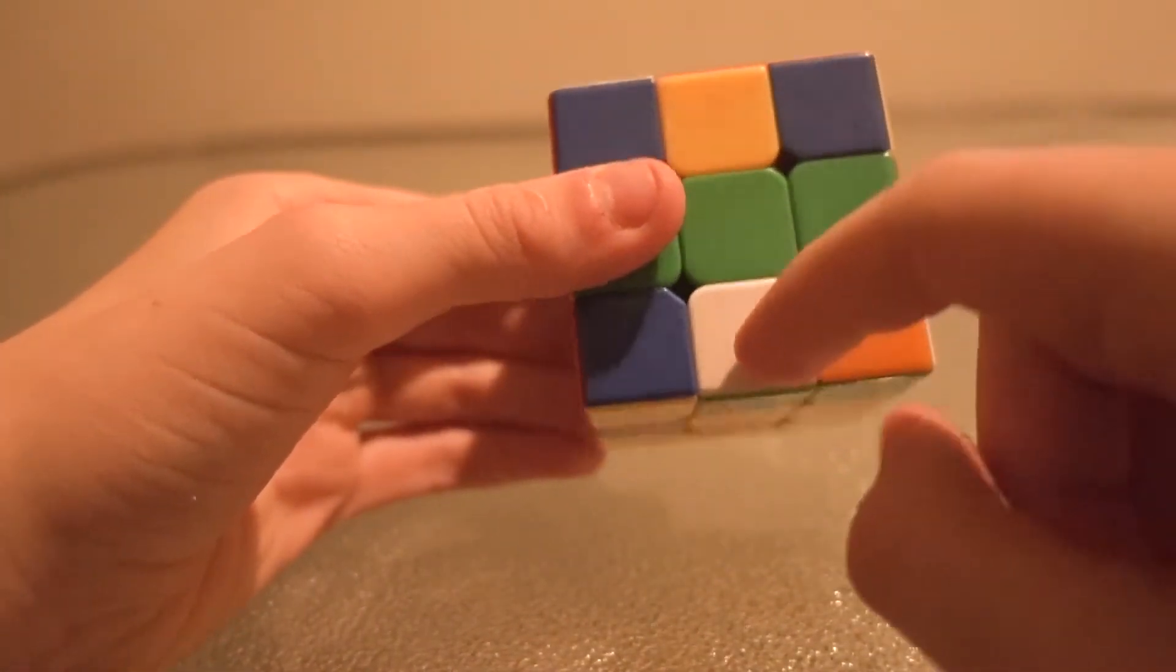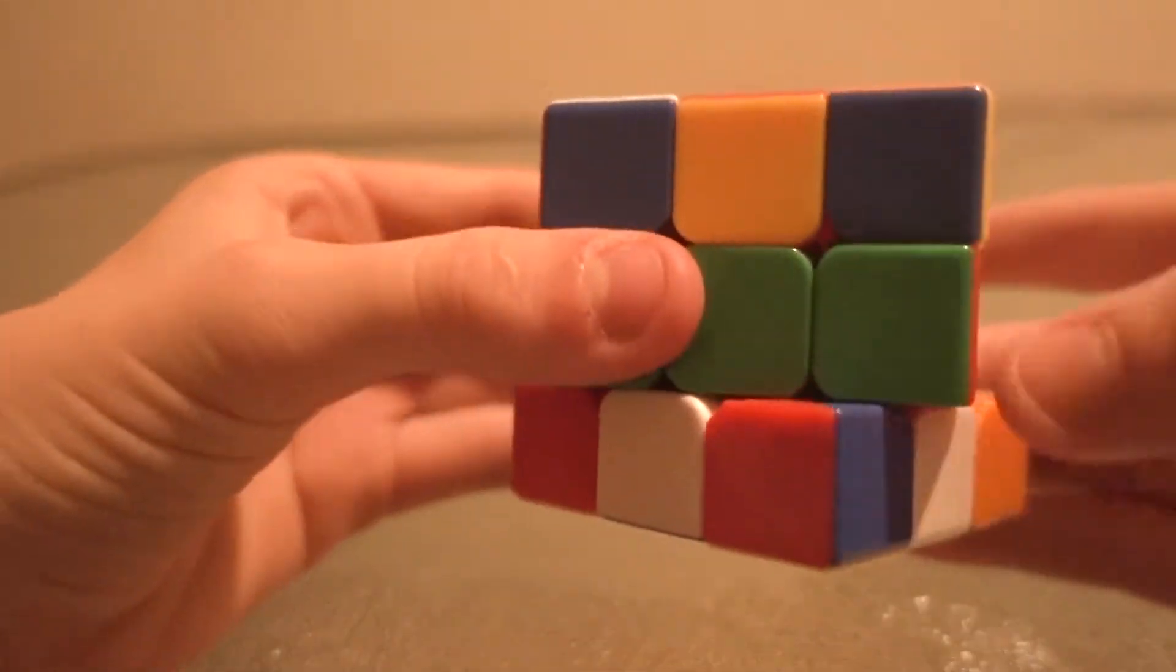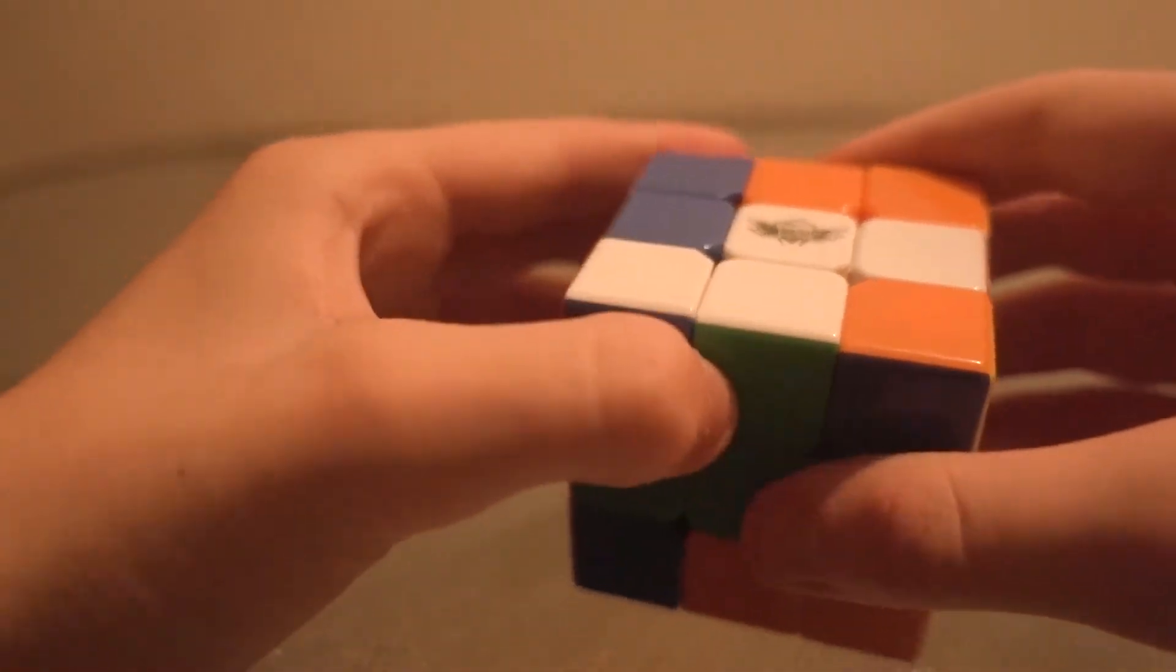And for this one, since this white piece is right here instead of here, we're going to turn it right, bring the middle down, bring this back, and then like this.